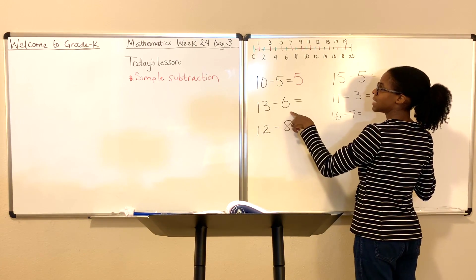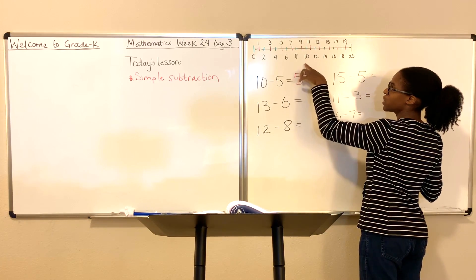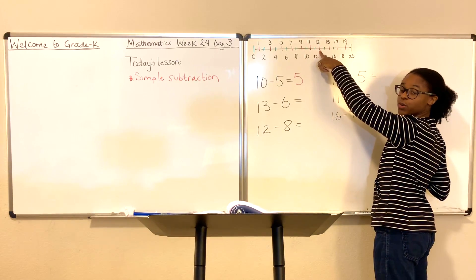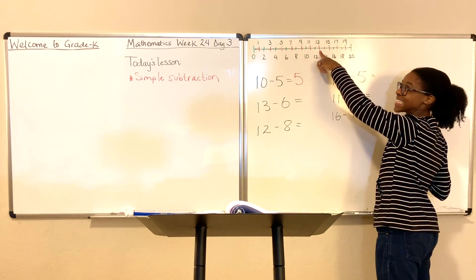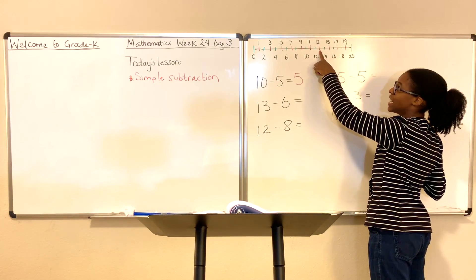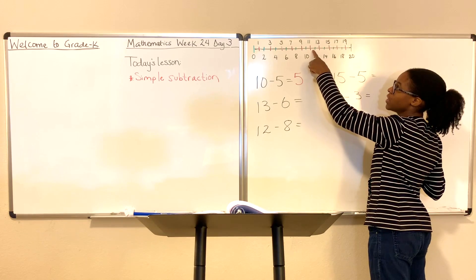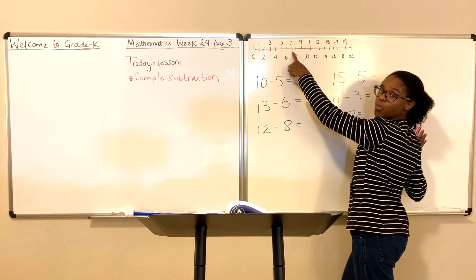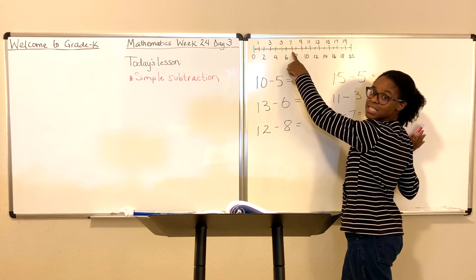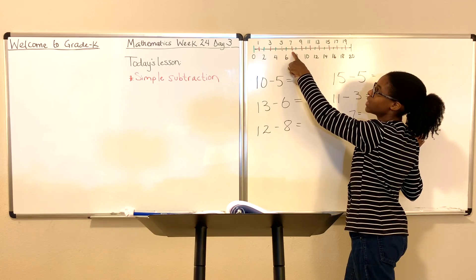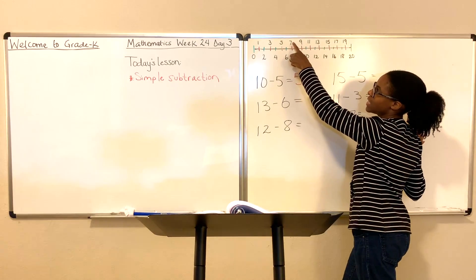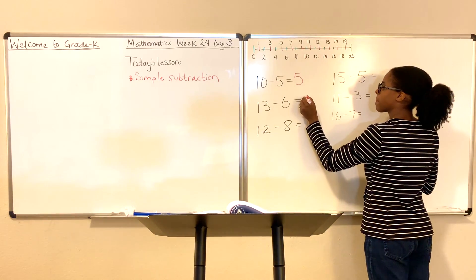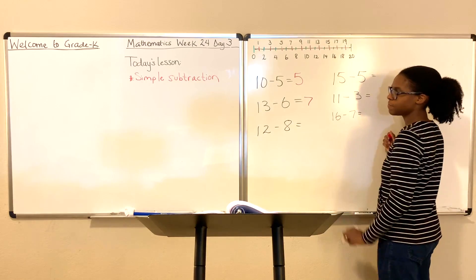13 minus 6. So we're going to find 13 on the number line. Here's 13. We're going to subtract 6: 1, 2, 3, 4, 5, 6. What number does this line land on? It lands on 7. Therefore, 13 minus 6 is 7.